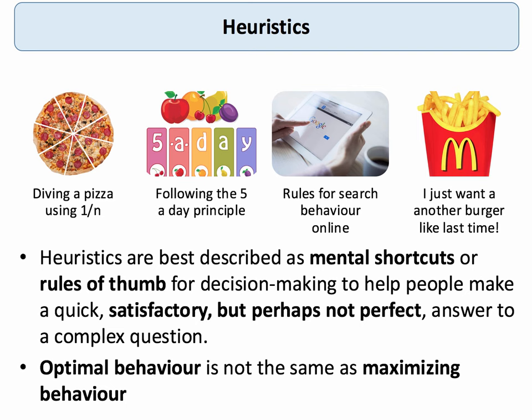Rules of thumb. Basically, heuristics are mental shortcuts for decision making and they help people make a quick decision — a satisfactory decision, but not necessarily a perfect answer to a complex question. So instead of trying to maximise their utility or maximise their satisfaction, people who use heuristics are trying to optimise rather than maximise. The term was actually developed along with bounded rationality and satisficing by the cognitive scientist Herbert Simon.